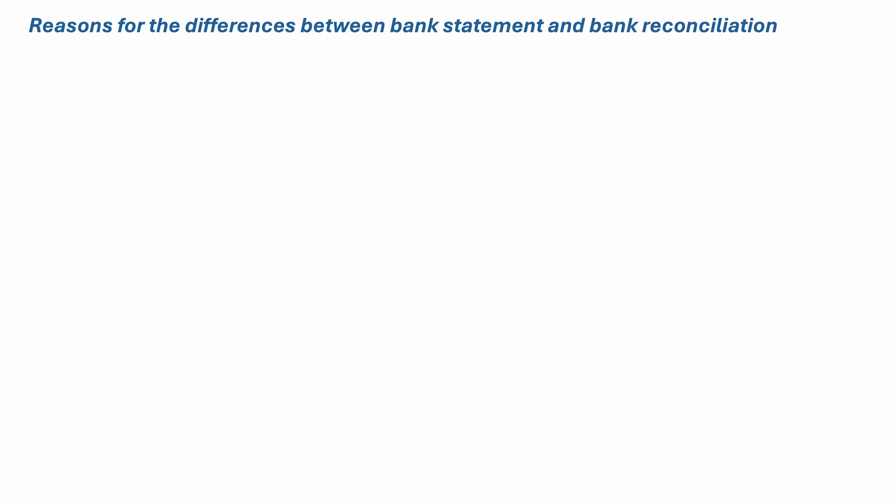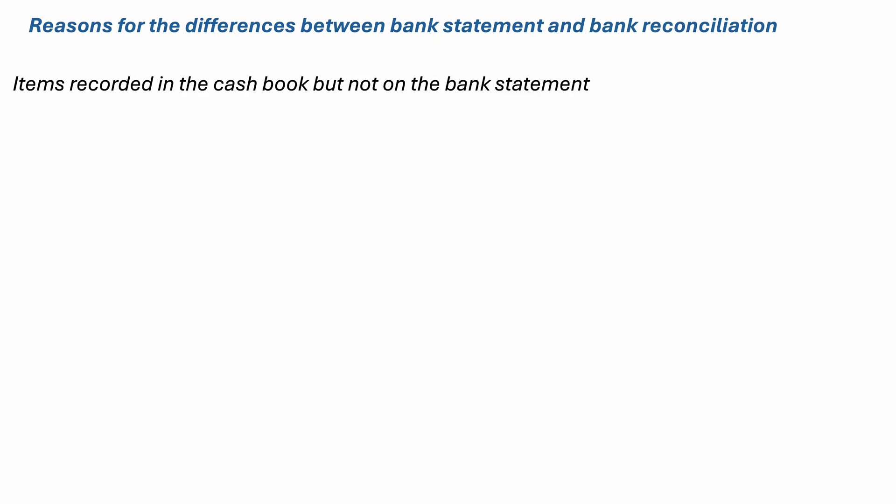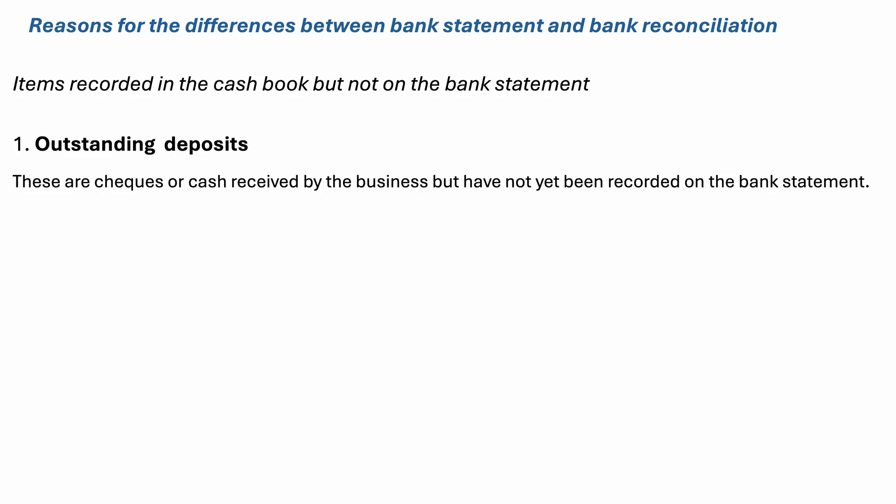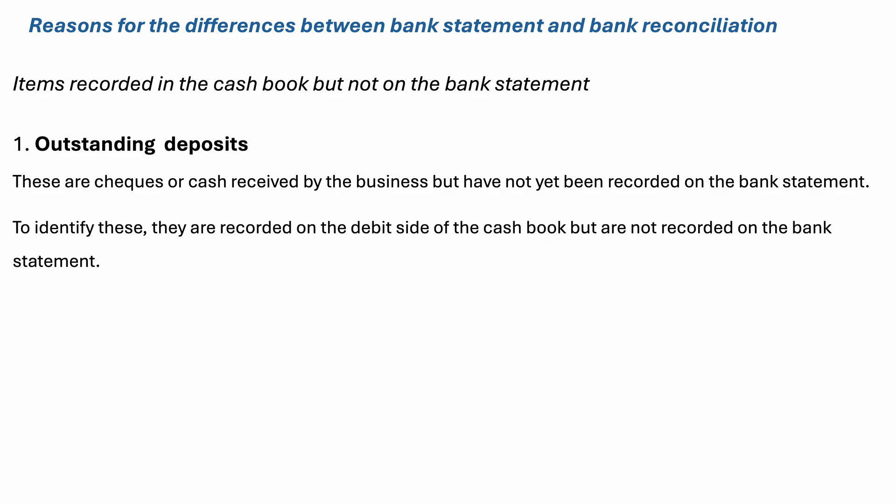Let's first look into items recorded in the cash book but not on the bank statement. Number one: outstanding deposits. These are checks or cash received by the business but not yet recorded on the bank statement. To identify outstanding deposits, they are recorded on the debit side of the cash book but are not recorded on the bank statement.